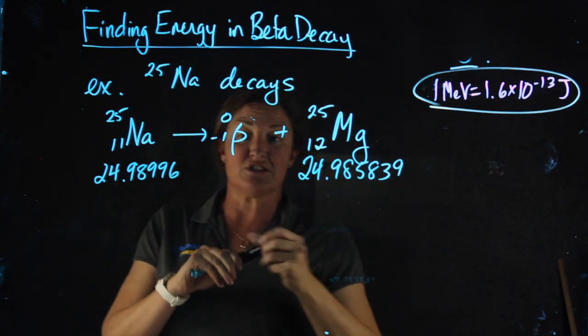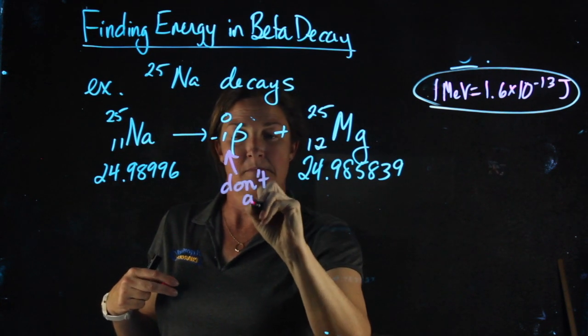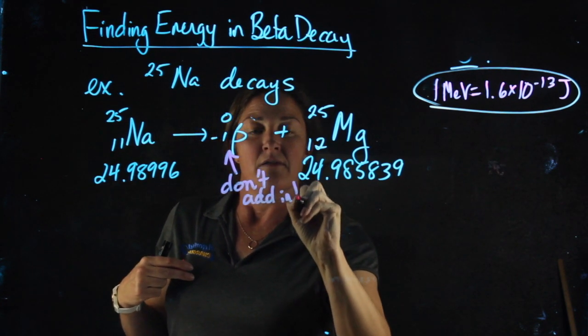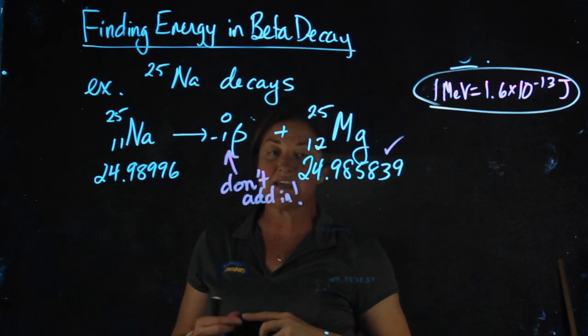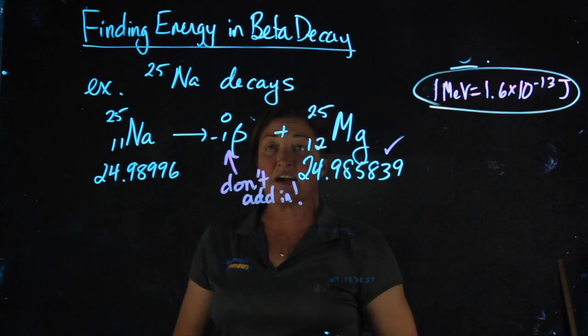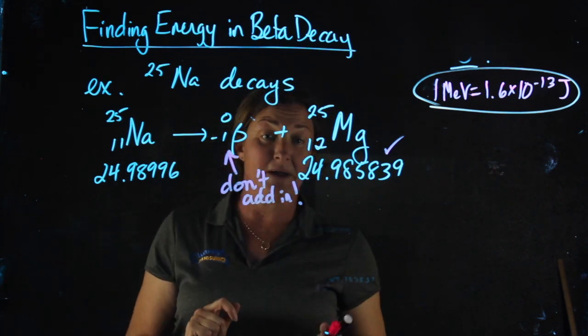What you need to be careful of is don't include this. Don't add it in. The reason you don't add it in is this number, this nuclide mass already contains that electron. And it's subtle and it's difficult for me to explain, but I just want you to remember, don't include the beta particle.